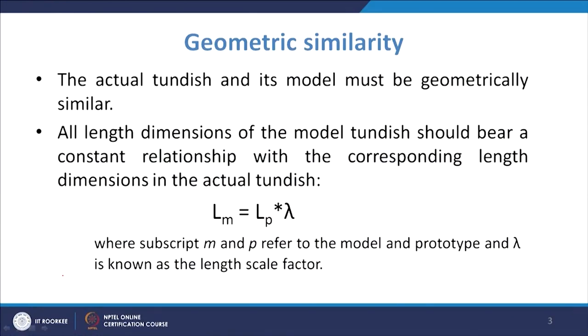Geometric similarity tells that the actual tundish and its model must be geometrically similar. When we are making the model tundish, it will be geometrically similar, meaning the ratio of their geometrical parameters should remain constant. For example, if you have a tundish of 3 meter length and you are making a model tundish of 1 meter length, the ratio of prototype to model is 3, or model to prototype is 1/3. So it is a 1:3 model, and 1/3 is the length scale factor.